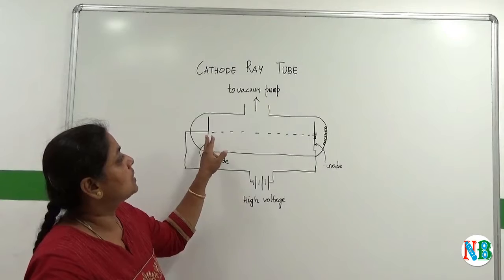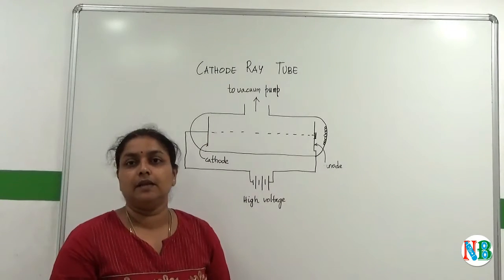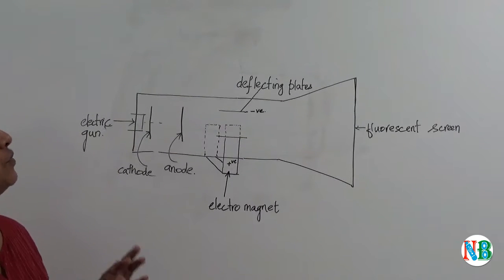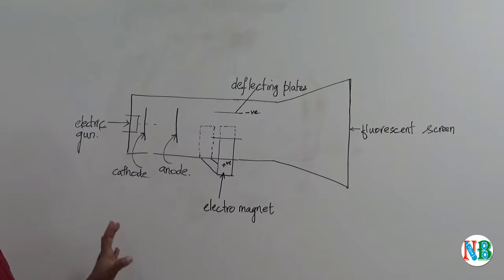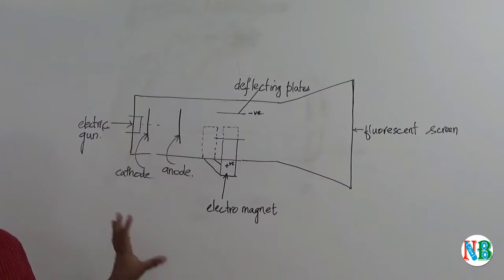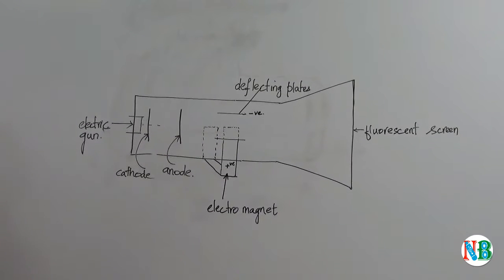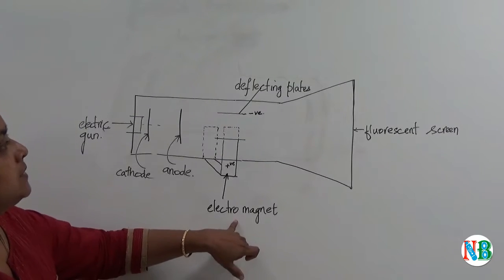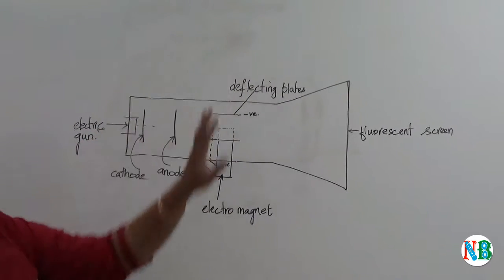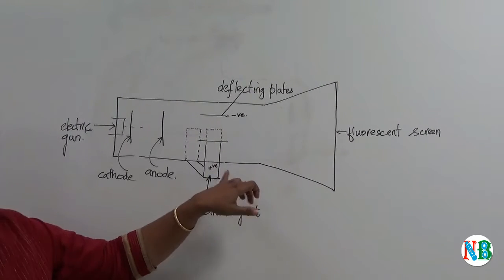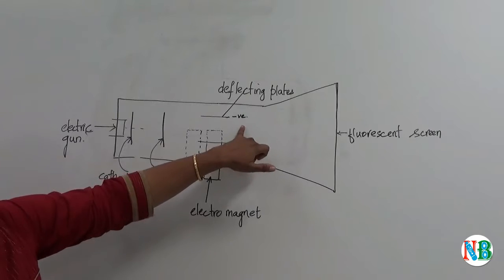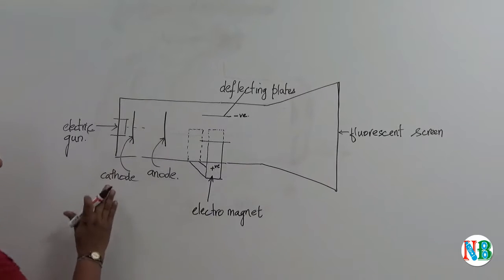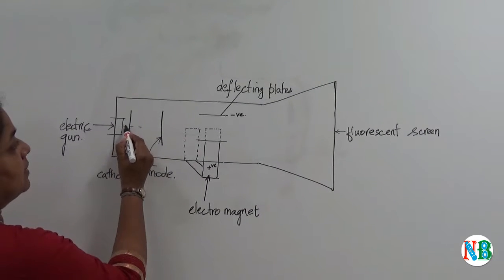These particles which are released by the cathode were given the name electrons. In 1897, J.J. Thomson performed another experiment slightly modifying the experiment that Michael Faraday did using a cathode ray tube. In this, what he added was, he added an electromagnet and electrically deflecting plates. Electromagnets supplied the positive charge and deflecting plates supplied the negative charge. On sending an electric current onto the cathode, the ray went straight.